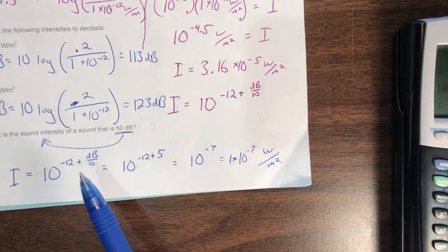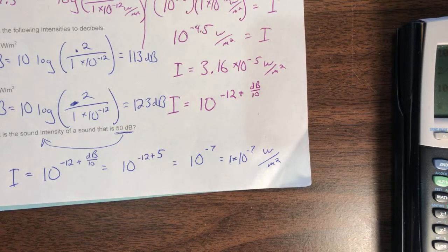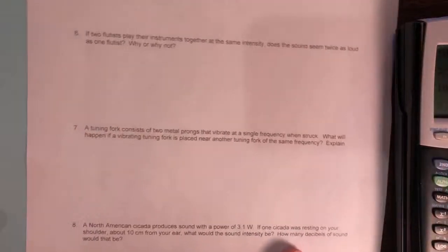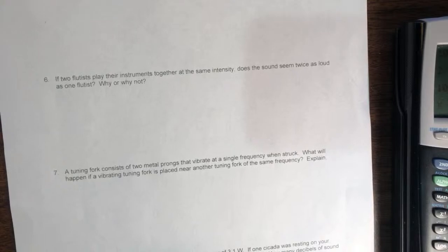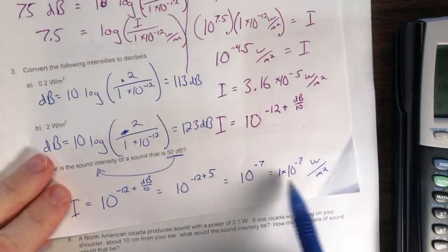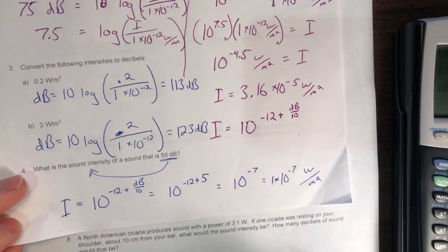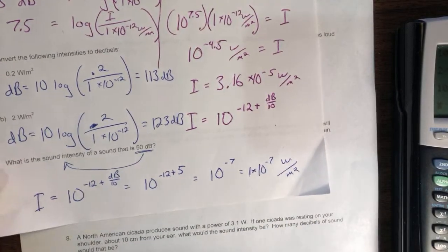Zero decibels is the threshold of hearing, and we can barely make it out. If something's at zero decibels, I might not be able to hear it, but you guys probably could because you're all young and haven't heard ridiculously loud explosions like I have. So you guys all have better hearing than me — 50 decibels, everybody can hear that. They're the same answer: 10⁻⁷ or 1×10⁻⁷. I just put it in scientific notation form, but you can write 10⁻⁷ or write it out as 0.0000001 watts per square meter.